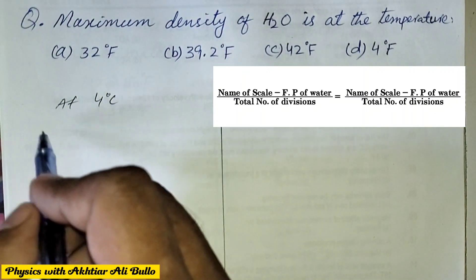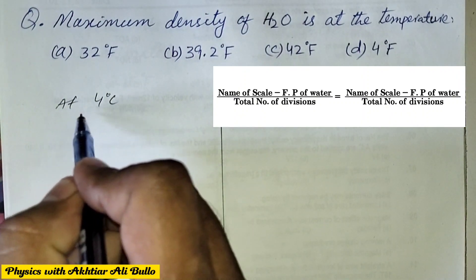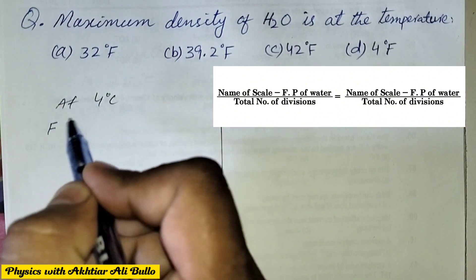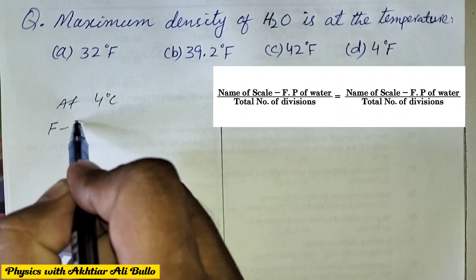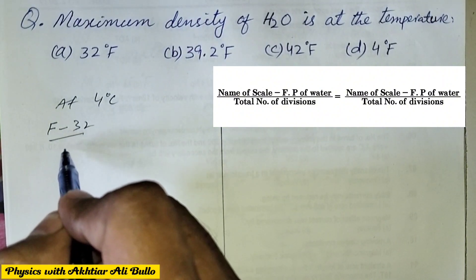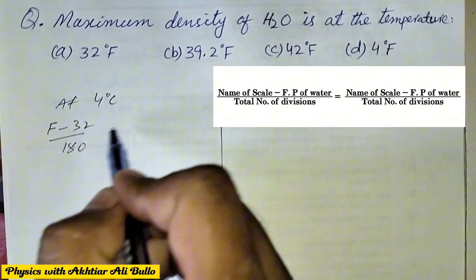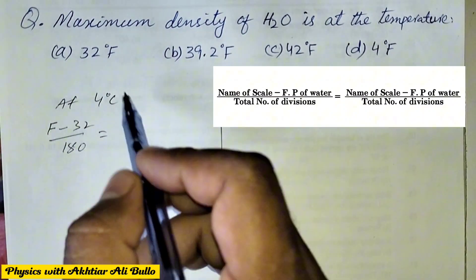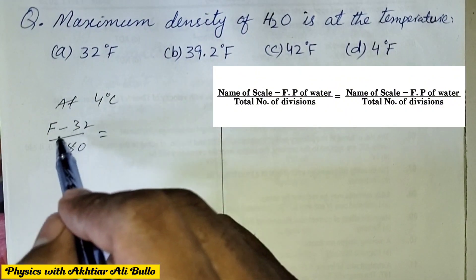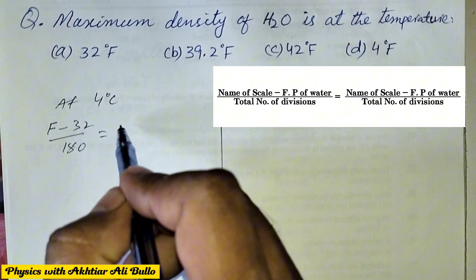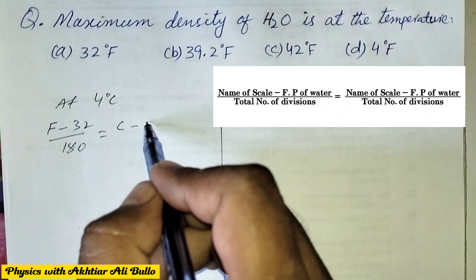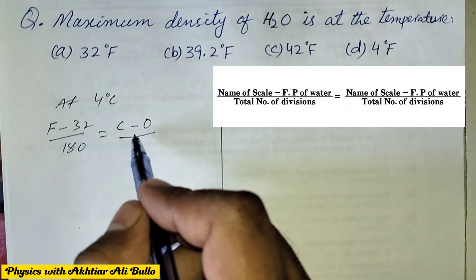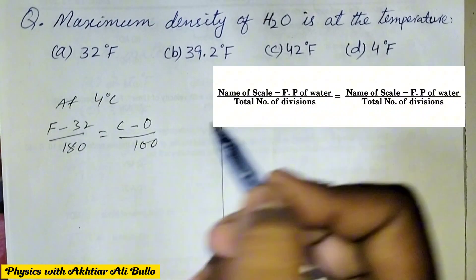Name of scale minus freezing point divided by total number of divisions. The name of scale is Fahrenheit minus freezing point is 32 divided by total number of divisions which are 180, is equal to name of scale. We are converting from Celsius to Fahrenheit. So name of scale is Celsius minus freezing point on Celsius is 0, and the total number of divisions on Celsius is 100.